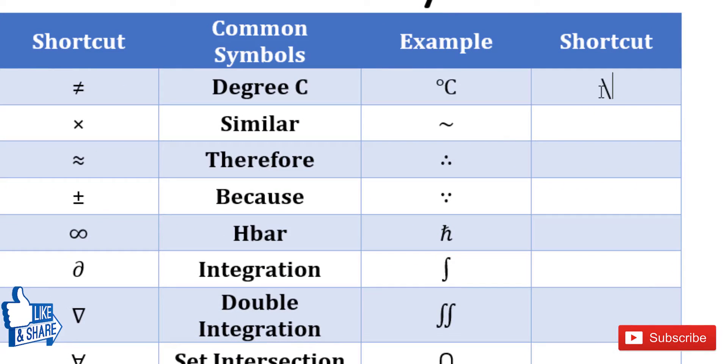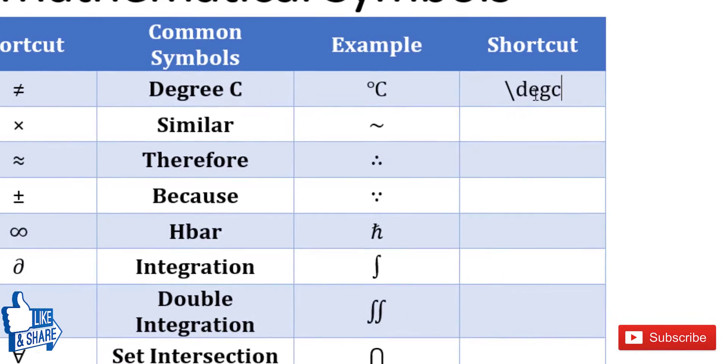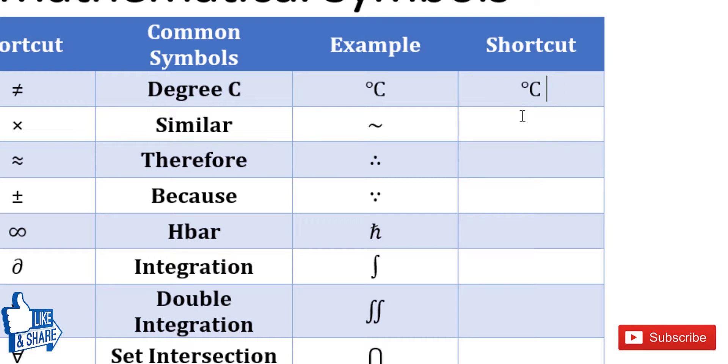Degree C symbol—we just write deg and then C and then press space, and you get the degree C symbol. And for the similar symbol, just type backslash sim. For therefore, you just type backslash and the name of the sign—that is therefore and press space. Similarly, because—also backslash because and then press space.